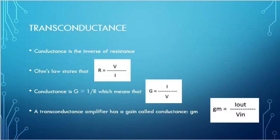Transconductance. We're going to start with conductance. Conductance is the inverse of resistance. Ohm's law states that resistance equals voltage over current. Conductance is the inverse of resistance, so conductance equals 1 over R, which means conductance equals current over voltage. We've inverted: this was voltage over current, now we have current over voltage.